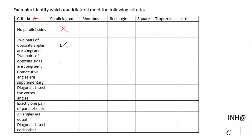'Two pairs of opposite sides are congruent' — that is another true property of a parallelogram. 'Consecutive angles are supplementary' — that is also true for a parallelogram. 'Diagonals bisect the vertex angles' — that doesn't work for all parallelograms, just special types. 'Exactly one pair of parallel sides' — that doesn't work either. 'Diagonals bisect each other' — that is a good property for a parallelogram.